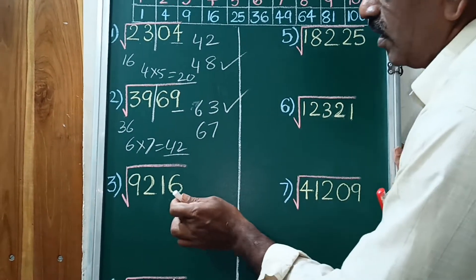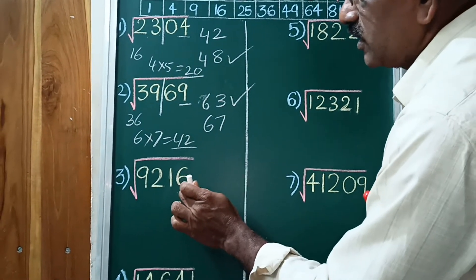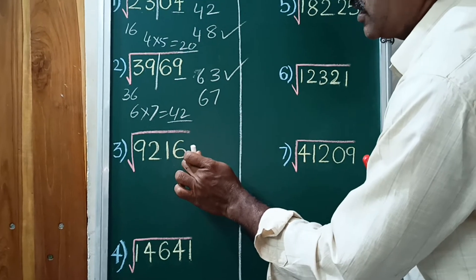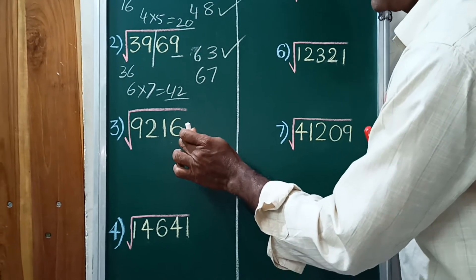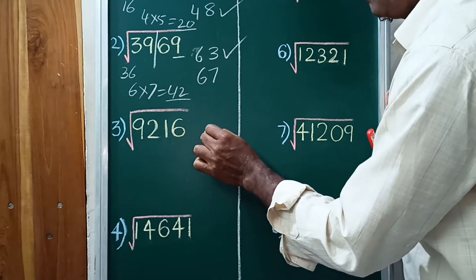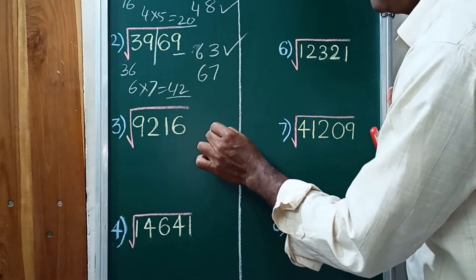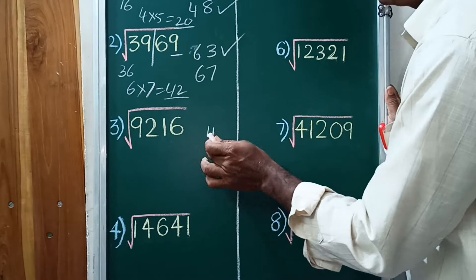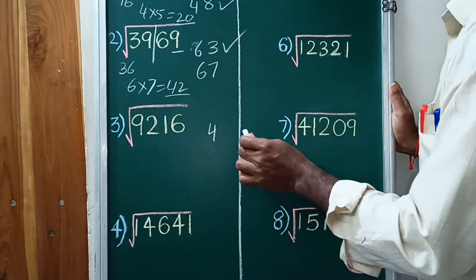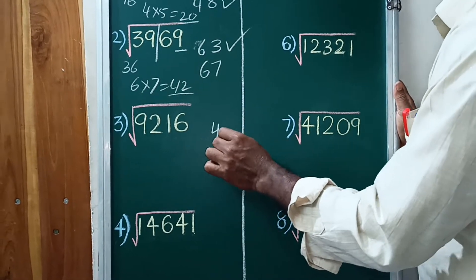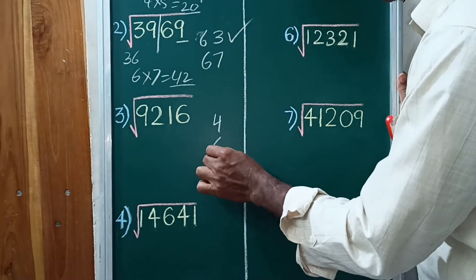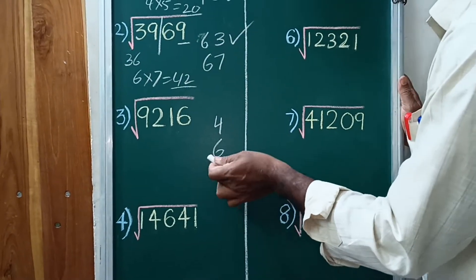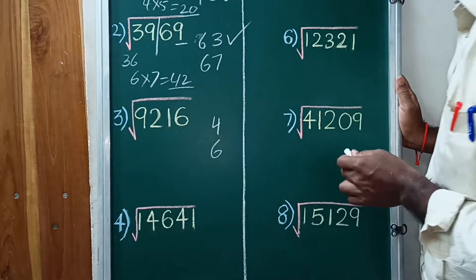Next example: the last digit is 6. The square complement of 6 is 6, so the unit digit is 6.